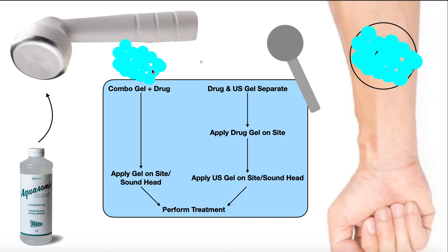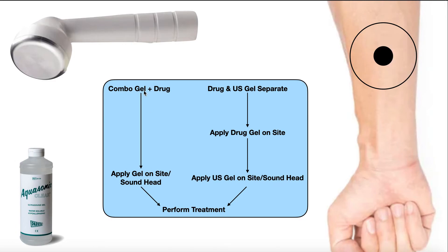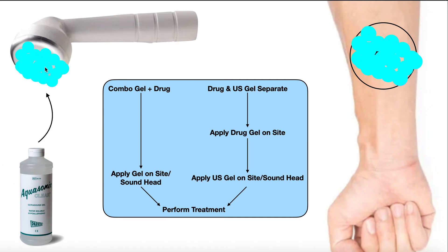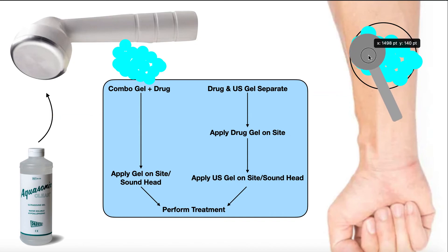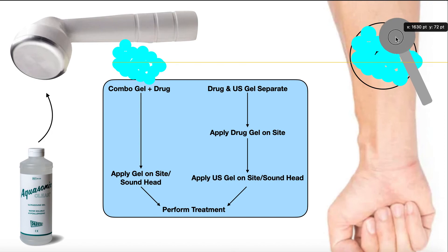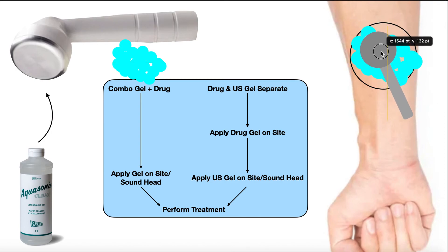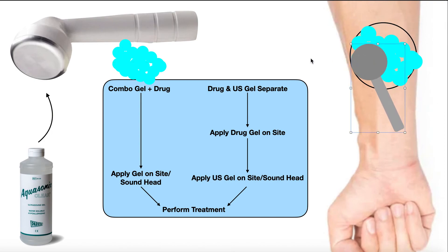In the other case, if we have a combo gel where the drug is mixed into the ultrasound gel, it's simpler: first put that gel on the skin, then put that gel on the ultrasound head, and then everything else is the same — do those one-second circles, one, two, three, four, five, six, seven, and so on.